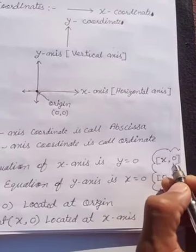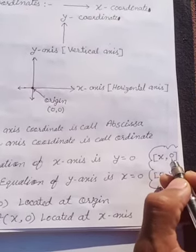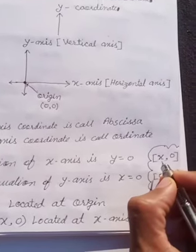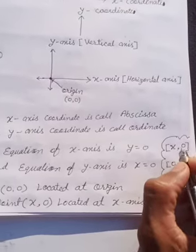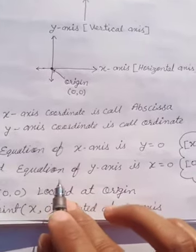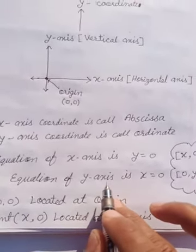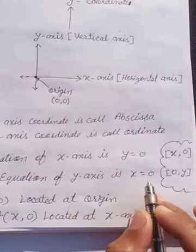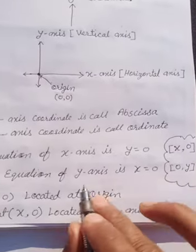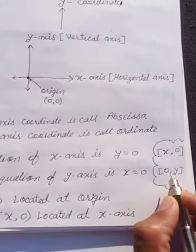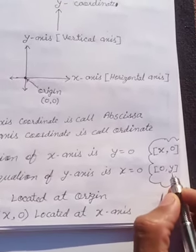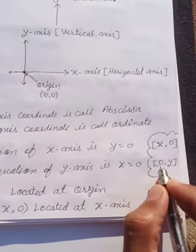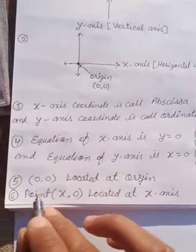In coordinate format, the x-axis point is written as (x, 0) — it lies on the x-axis and not on the y-axis. If asked in questions, the point on x-axis is (x,0) and its equation is y = 0. Next, equation of y-axis: it becomes x = 0, and in point format it is (0, y), because on the y-axis, x's value is 0. Remember: first position is always x, second is always y.